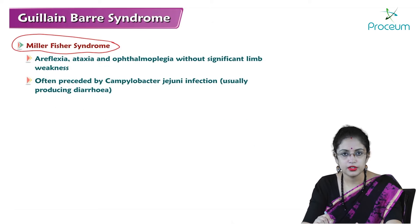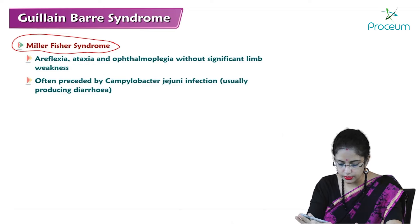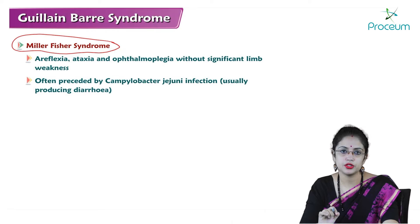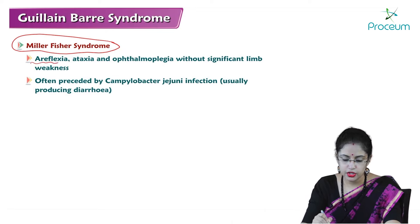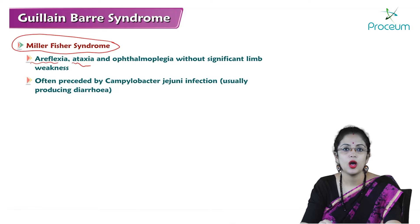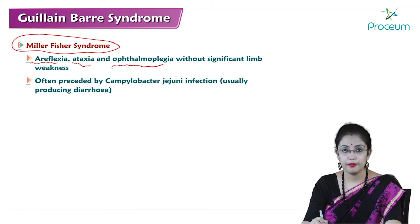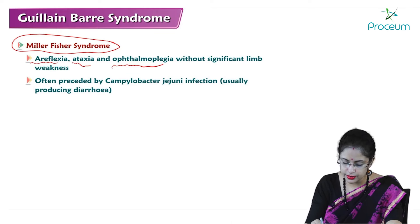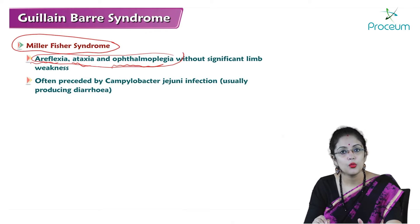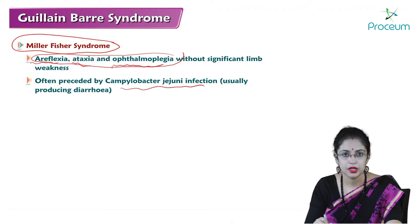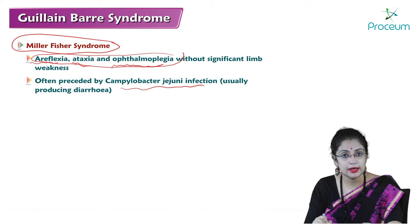Miller-Fisher Syndrome is an important variant with typical features: areflexia — all reflexes absent — ataxia (incoordination), and ophthalmoplegia due to paralysis of extraocular muscles, without significant limb weakness. These three are the significant findings in Miller-Fisher Syndrome. It is often preceded by Campylobacter jejuni infection — like most cases preceded by GI infection with Campylobacter jejuni.